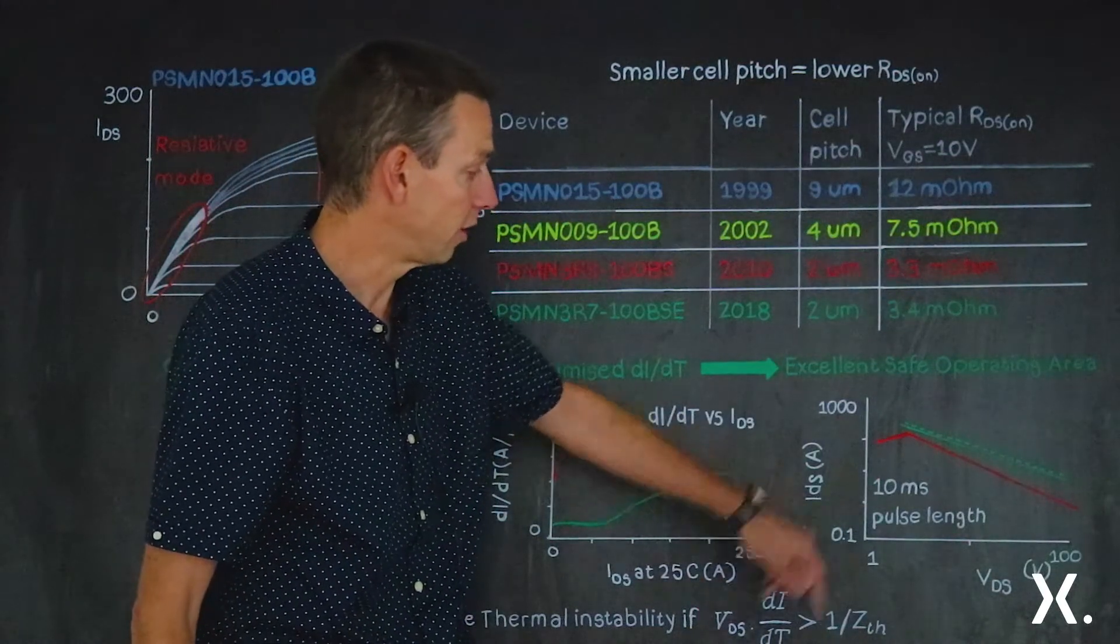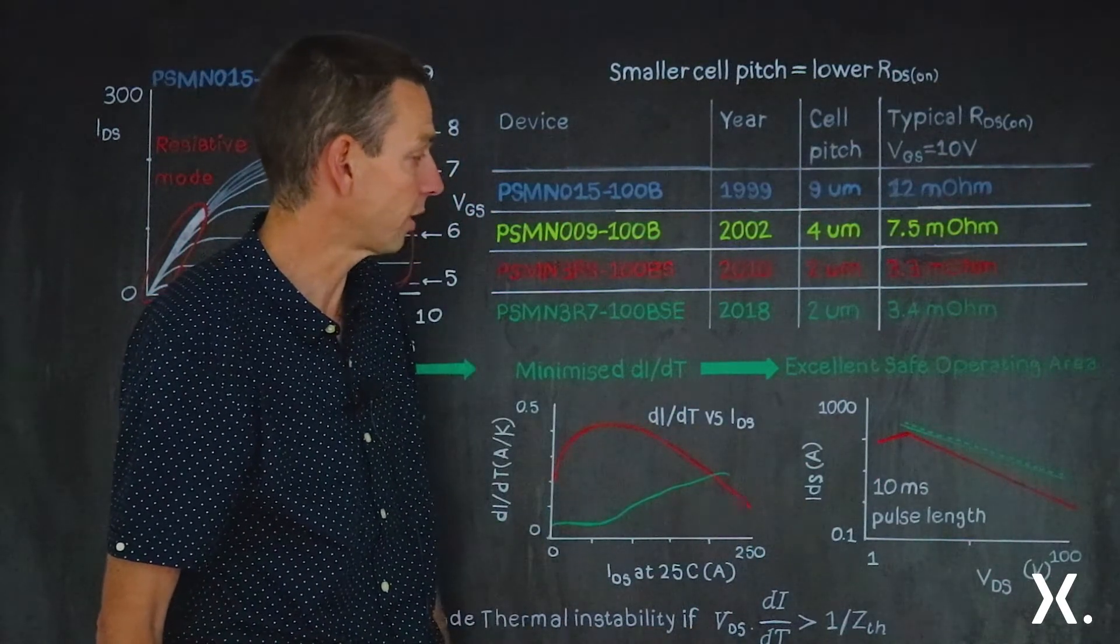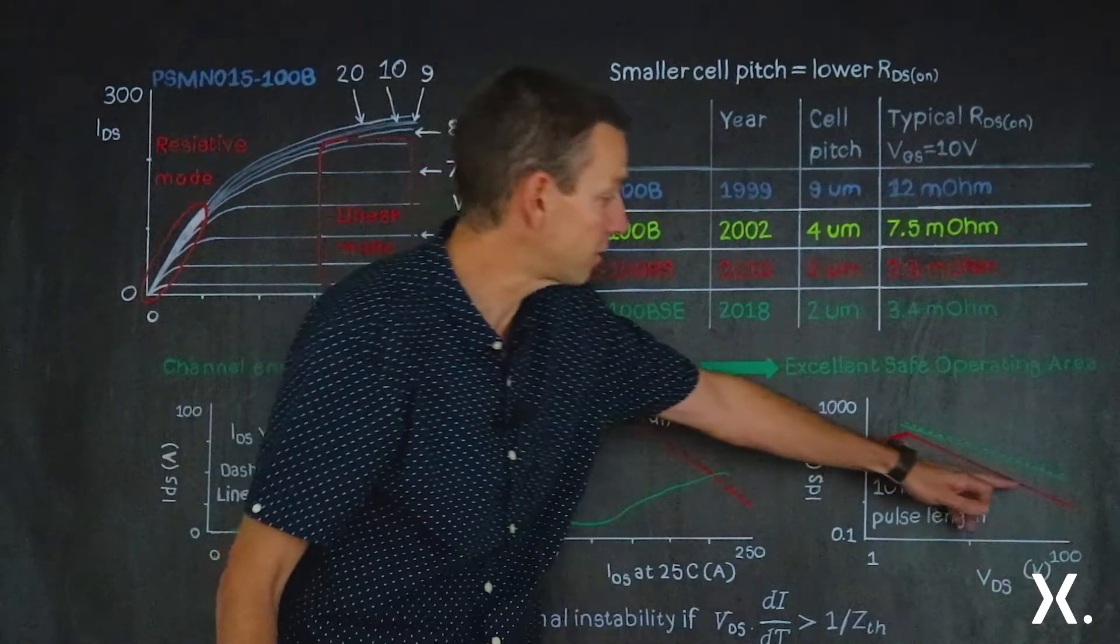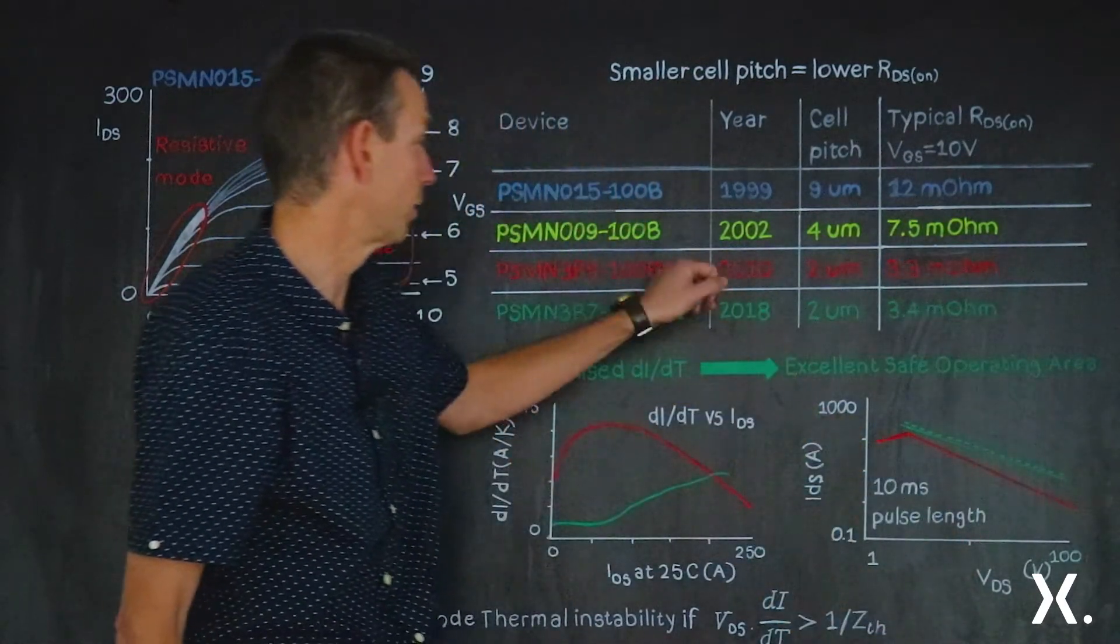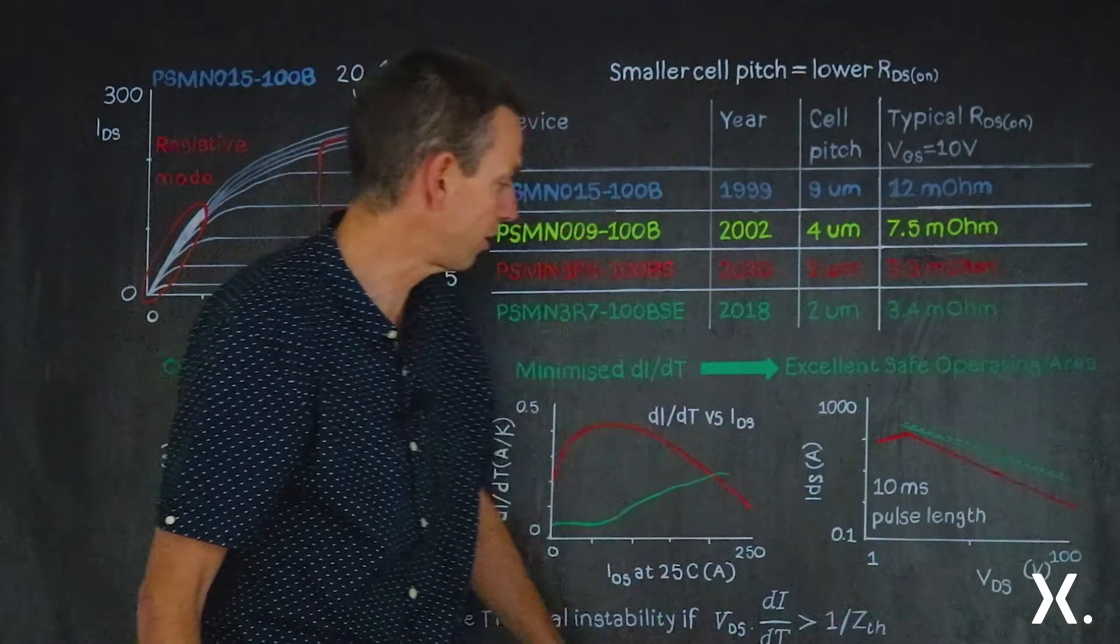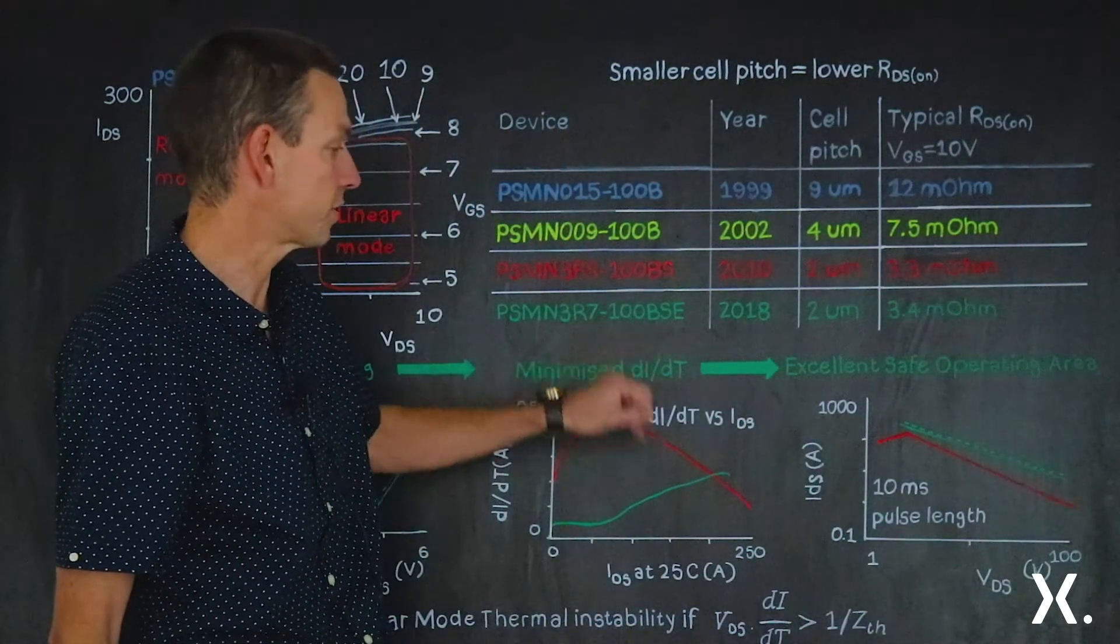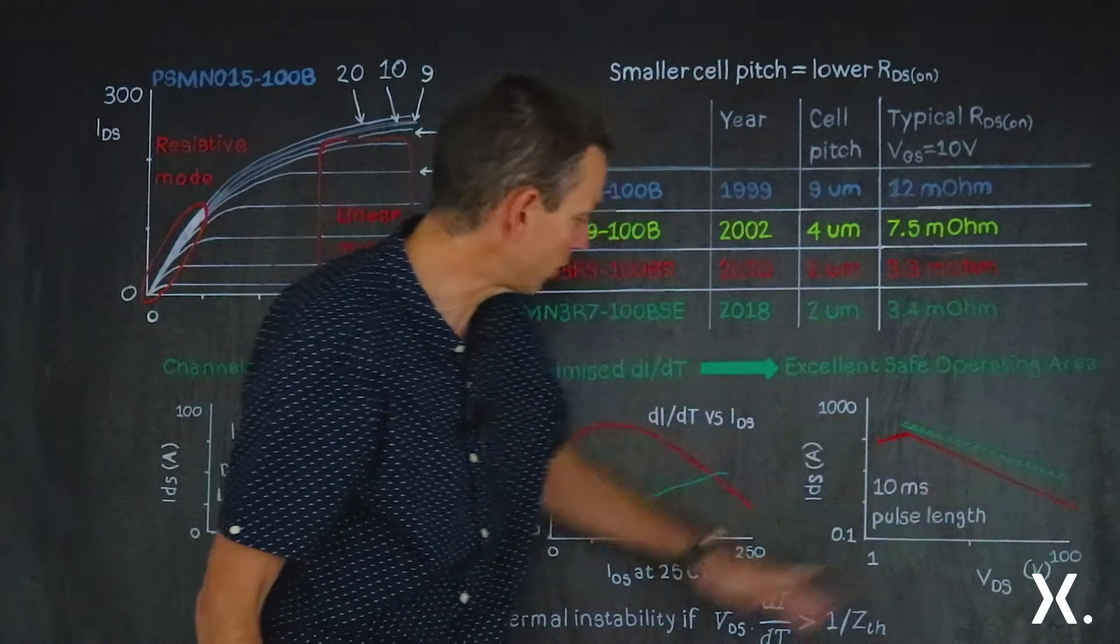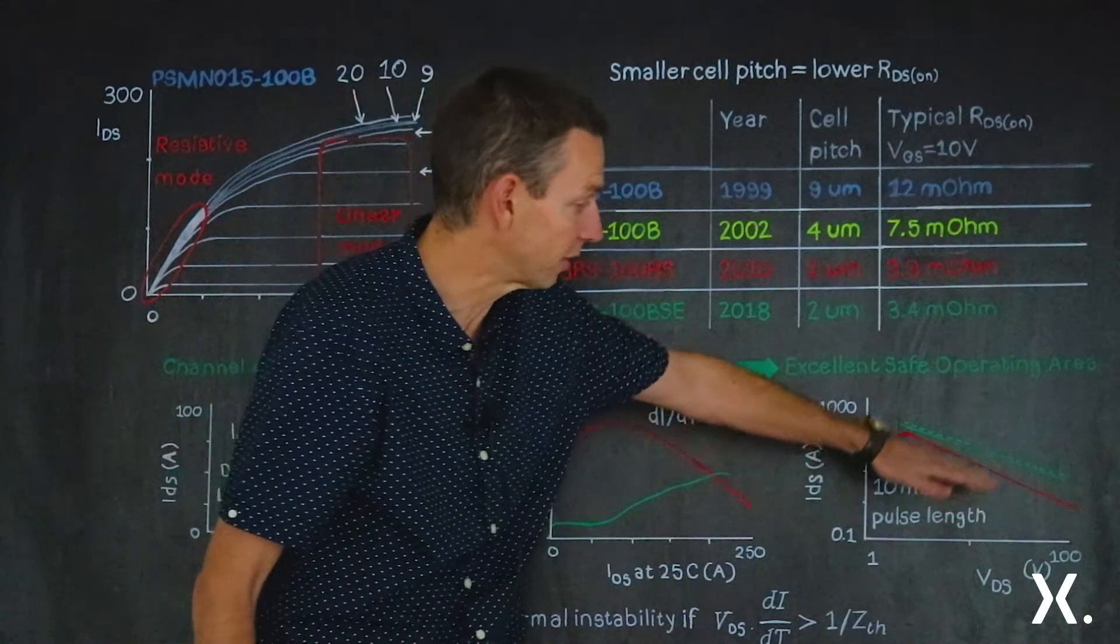So again, it's a safe operating area for 10 millisecond pulse length. We've got the red data, the safe operating area for the PSMN-3R8-100BSE, quite a reduced safe operating area. And now for this new device, the 3R7, the safe operating area, because we've got low DI-body-T, has been allowed to be increased again.